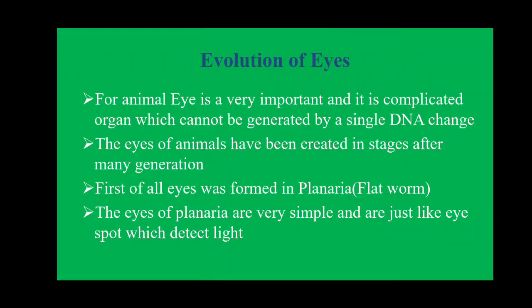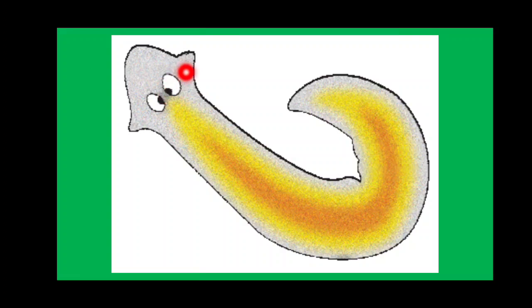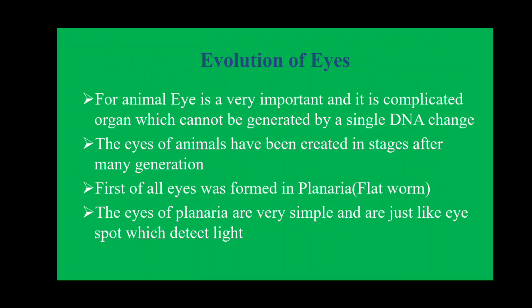First of all, evolution of the eye. The first eye was noticed in the planaria, and the planaria eye is a simple eye. Here you can see a spot-like structure — this is the eye of planaria, a very simple structure. We will see the evolution of the eye by stages: how this simple eye develops into a complex structure.